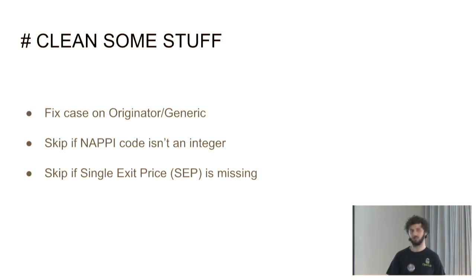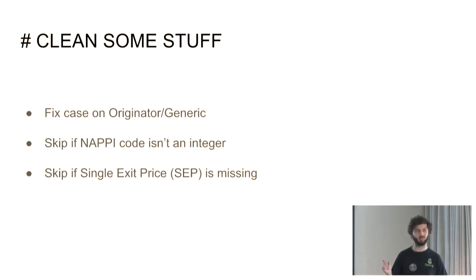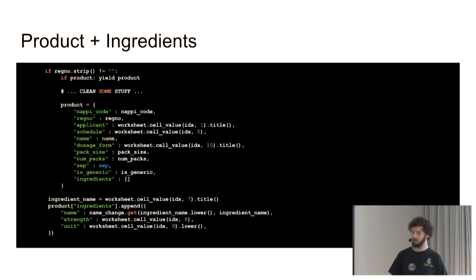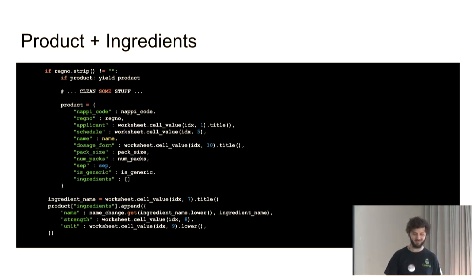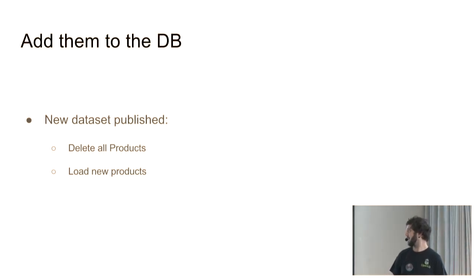If you hit a new product, yield the old product — now you're starting a new set of ingredients. That deals with the multi-row structure. It's nasty in Excel but it works, and we stick it into a Postgres database — SQLite for my colleague. While processing records you can do basic cleaning: fixing wording, fixing typos. Skip if there's no NAPPI code — that's what should be the primary key. If it's not an integer or not present, it's invalid. If we don't have a price, it's not relevant to this website. Once you have a list of ingredients, stick them into the product and store it in the database. Because we just need the latest prices, we delete all the prices when there's a new dataset, loop over them, add the new prices, and you're done.